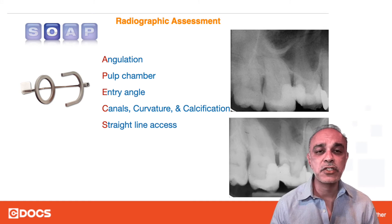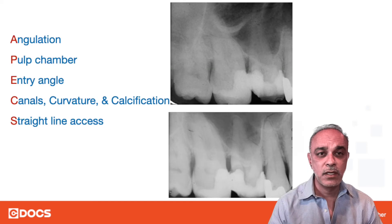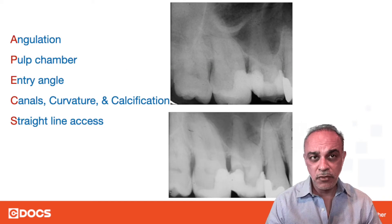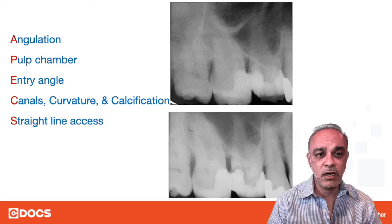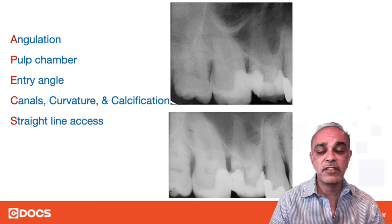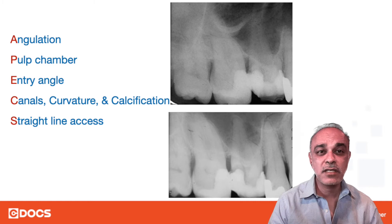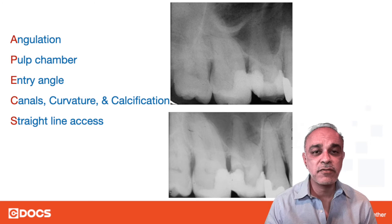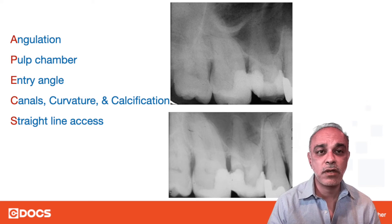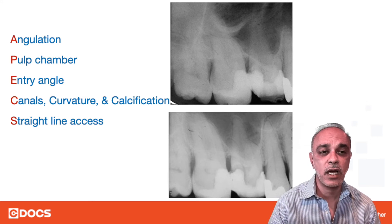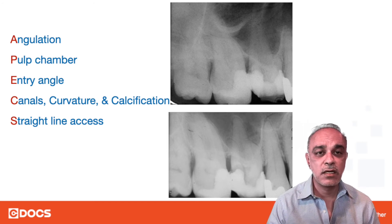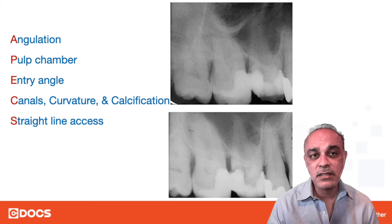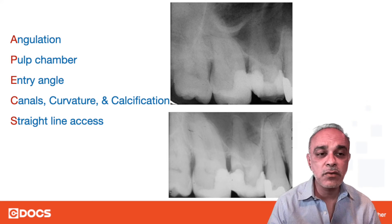After taking the radiograph, I want to make sure I got the right angulation. That means a couple things. One, that I have taken the angulation of the radiograph correctly — so if I think it's foreshortened, I want to make sure it's straight on. Most times I'll take possibly three radiographs: straight on, a shift radiograph, and a bite wing. That gives me a lot more information. But also I want to know the angulation of the tooth — is it mesially inclined, distally inclined, or buccally inclined?